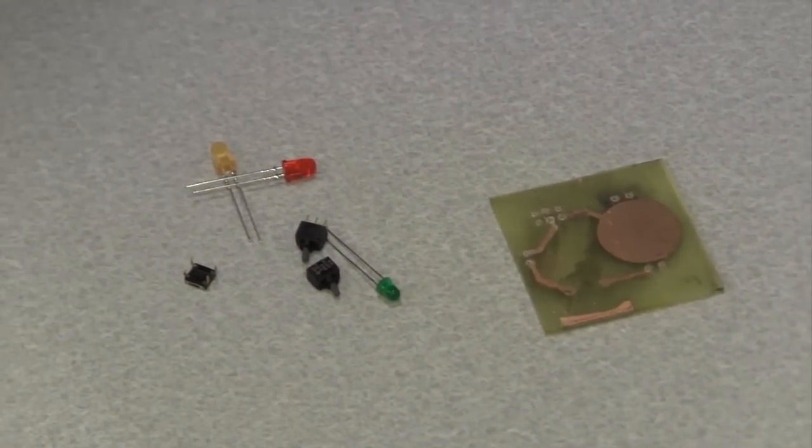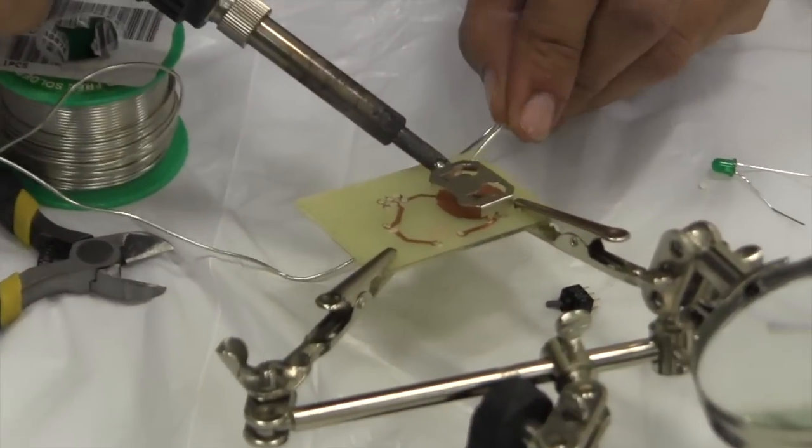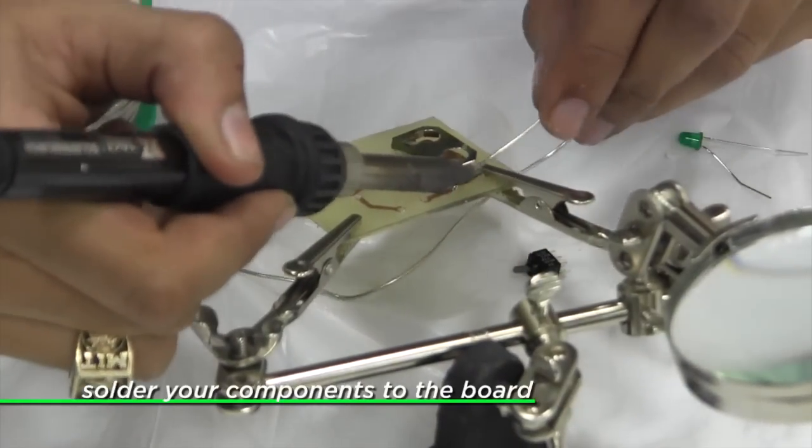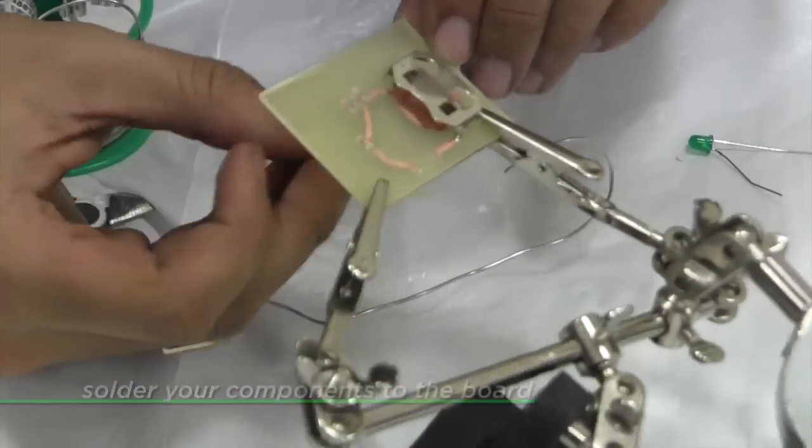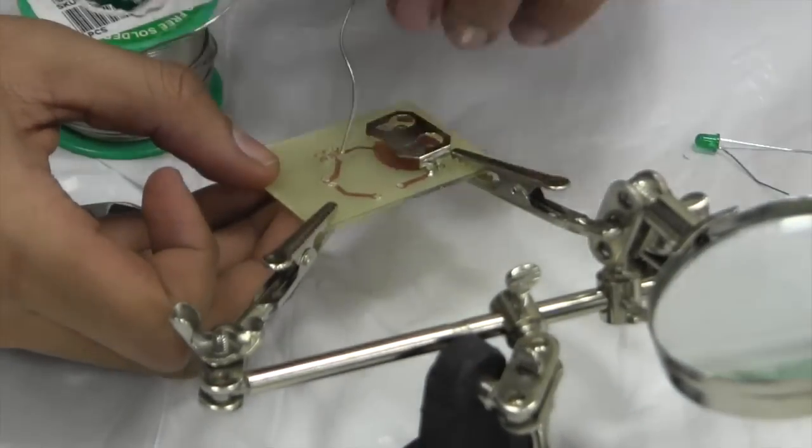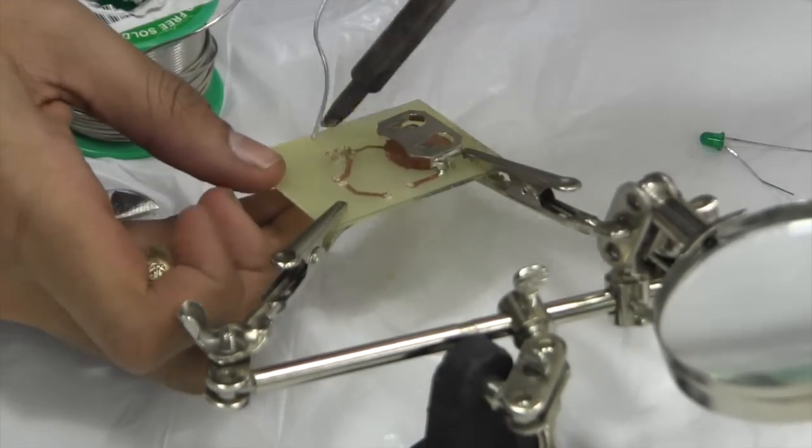Now we're ready to put the circuit together. To attach the parts to our circuit board, we'll use a soldering iron. This tool gets really hot, 700 degrees Fahrenheit, and melts a special metal called solder onto our board and parts. It's like glue for electronics.